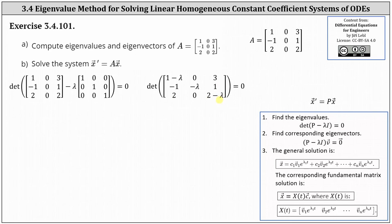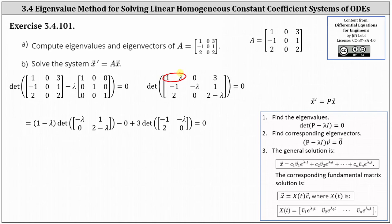Now we evaluate the determinant using expansion by minors along the first row. The determinant equals the first entry in row one, column one, times the determinant of the matrix after deleting row one and column one — giving us the two by two matrix with entries negative lambda, one, zero, and two minus lambda. The second entry in row one is zero, so we skip that term.